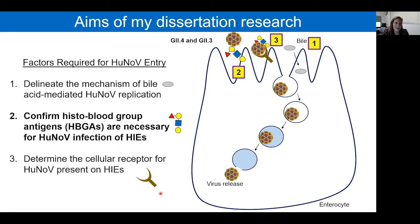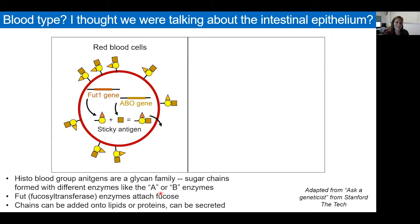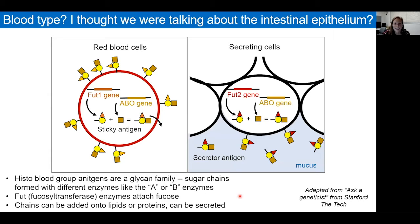Before I continue, I want to go into more detail on blood type. Histo-blood group antigens are a glycan family originally identified from red blood cells. Glycans are sugar chains formed with different enzymes, like the A or B you've heard of in reference to blood type. In red blood cells, fucosyl transferase 1 adds fucose—depicted as a triangle—onto growing sugar chains. In cells of the small intestine, a different fucosyl transferase is active, FUT2, which also adds fucose to growing chains that can be displayed on the cell surface and secreted outside the cell.